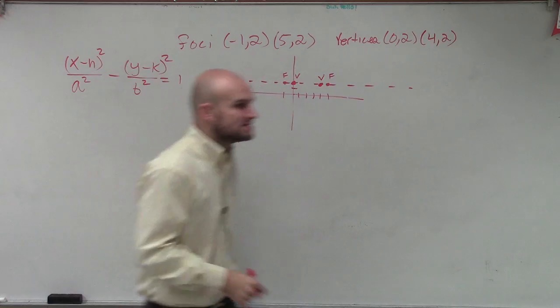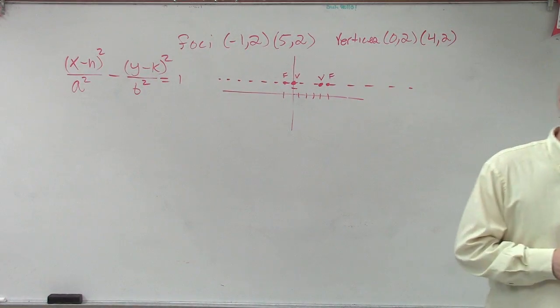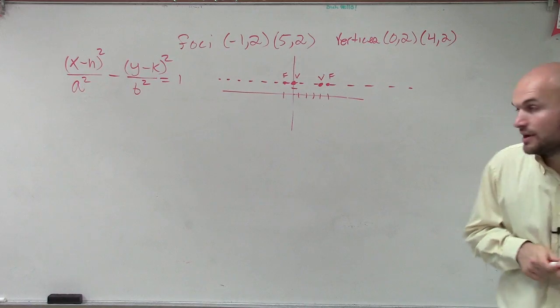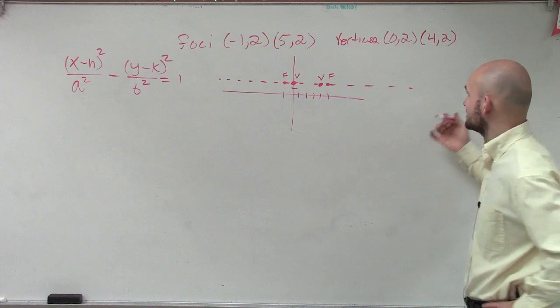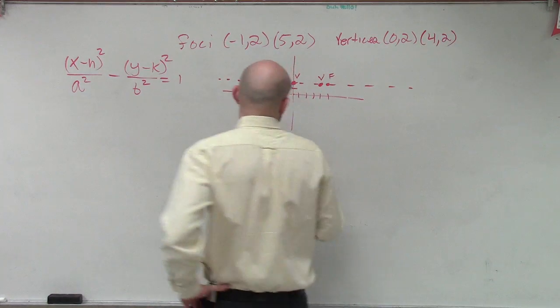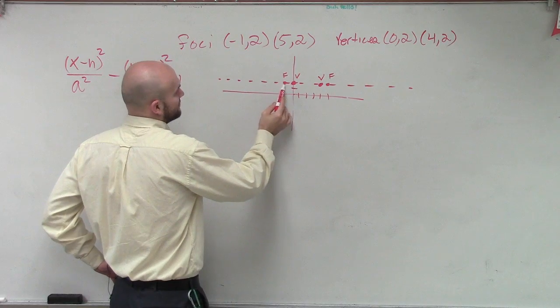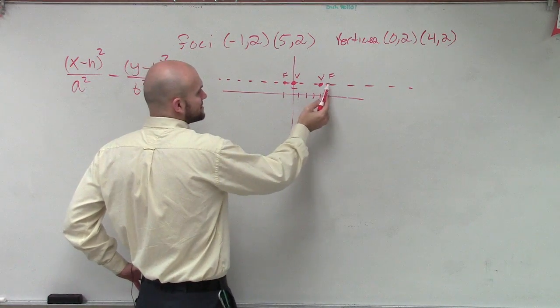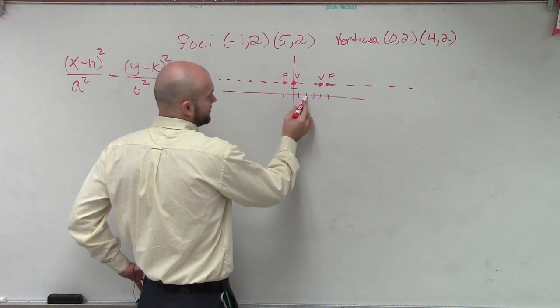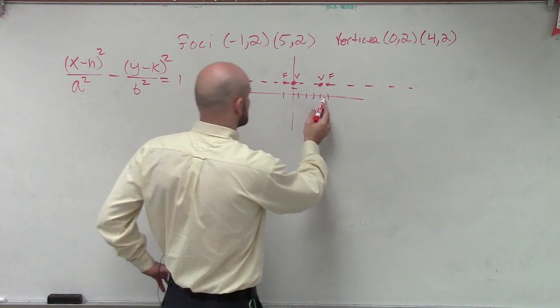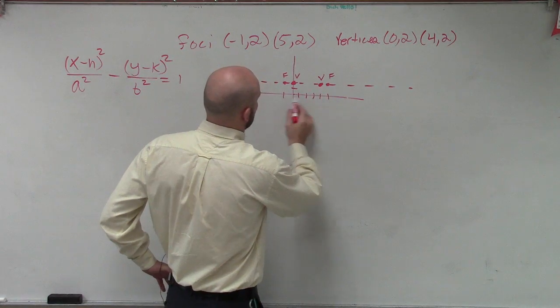So, therefore, for us to figure out this equation, we need to know the center, we need to know a, we need to know b. Right? So, remember that the vertices are the exact distance from our center point. So, I have vertices at negative 1, 2, and at 5... count 2. So, how far is that distance? 1, 2, 3, 4, 5, 6.